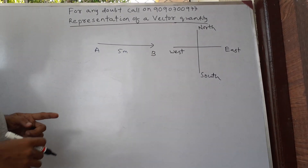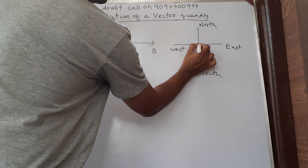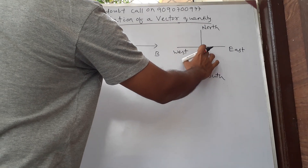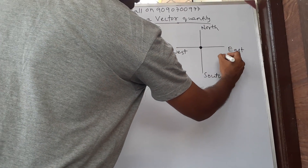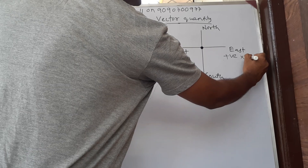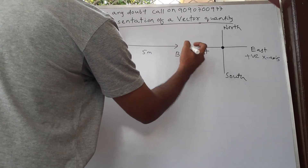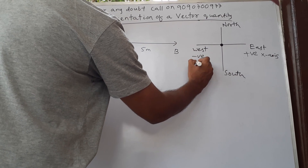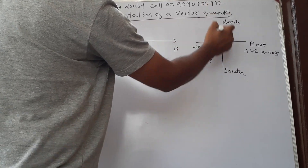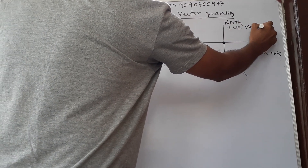This is east, this is west, this is north, this is south. From the origin towards the right, moving along positive x-axis. From origin to the right side is positive x-axis, whereas from origin to the left side is negative x-axis. Similarly, from origin to the top will be positive y-axis.